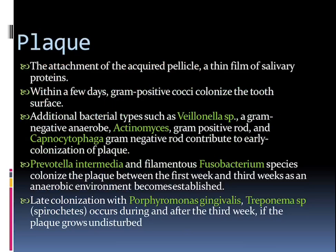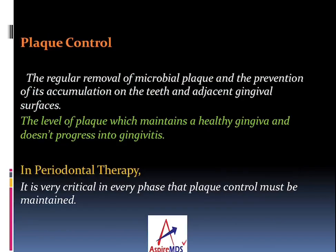Prevotella intermedia and filamentous Fusobacterium species colonize the plaque between the first and the third week as an anaerobic environment is established. Late colonization is done by Porphyromonas gingivalis and Treponema species during the end of the third week, and then plaque grows undisturbed.